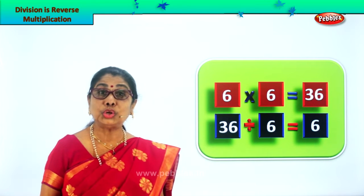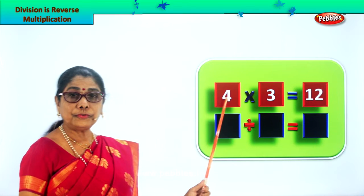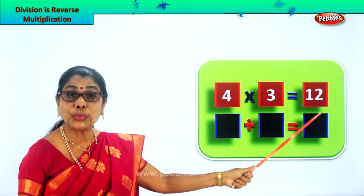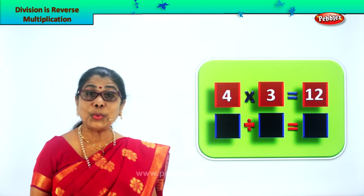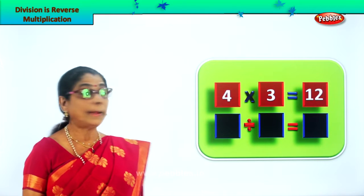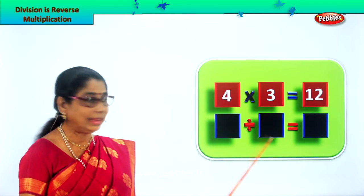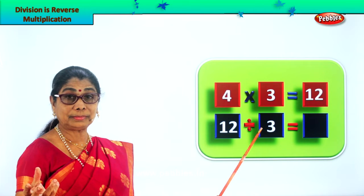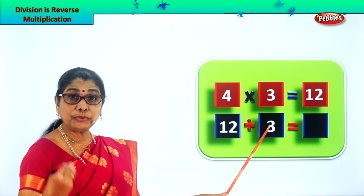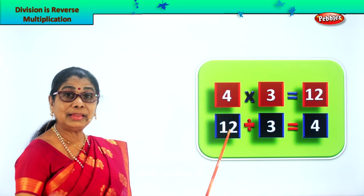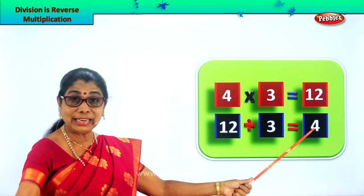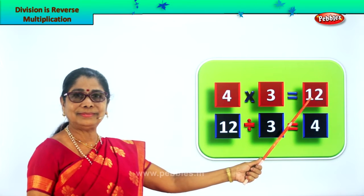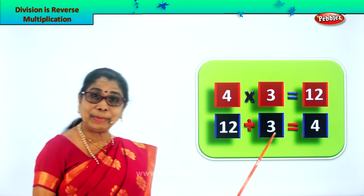Now six into six, six multiplied by six, is 36. Division is reverse multiplication. Let's look at another new sum. Four into three is equal to — four threes are — four multiplied by three is equal to twelve. Four into three gives you twelve. Let's divide twelve now by three. You write down here: twelve divided by three. Three will go into twelve how many times? Four times. Four threes are twelve. Three goes into twelve four times with no remainder. You get four. Division is reverse multiplication. Twelve divided by three is equal to four.